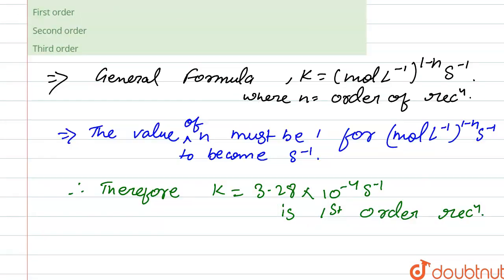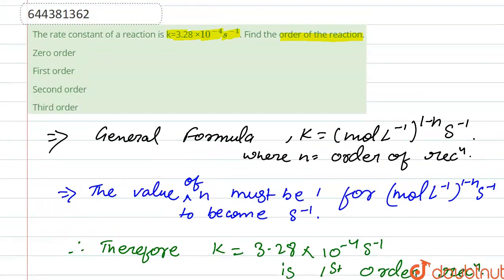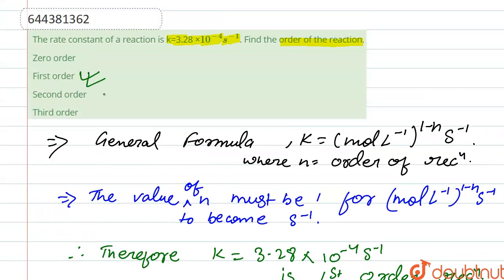If you put the value of n equals 1, so 1 minus 1 equals 0, the whole part becomes 1, and s inverse. So it is a first order reaction. So our correct option is option second. Thank you.